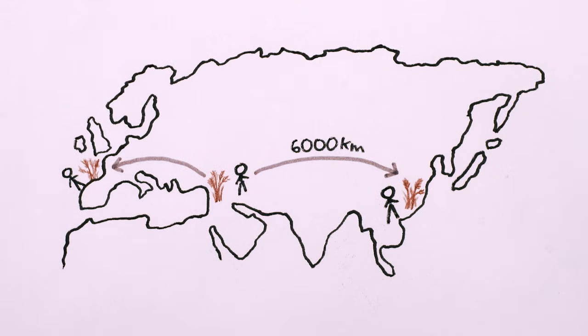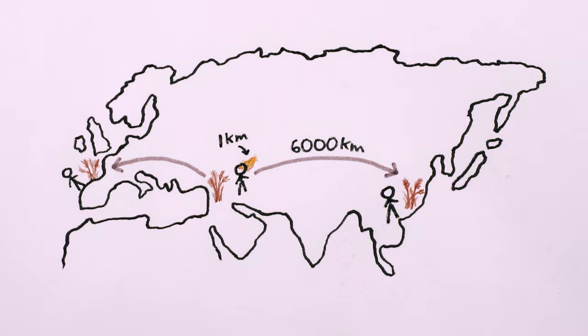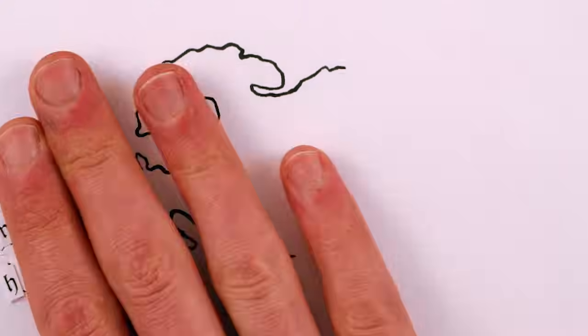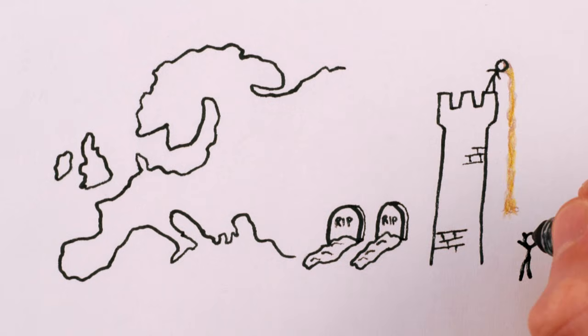6,000 kilometers in 6,000 years might seem like a blistering pace, but just wait for the Middle Ages. The bubonic plague and the printing press each spread across Europe in less than 100 years, bringing death and literacy to the populace before their hair could have even grown 15 meters.